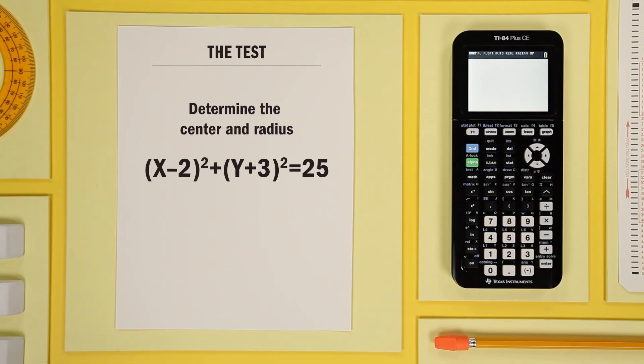The Conics app is a great tool for finding the center of a circle and its radius. Here, let's look at this example.